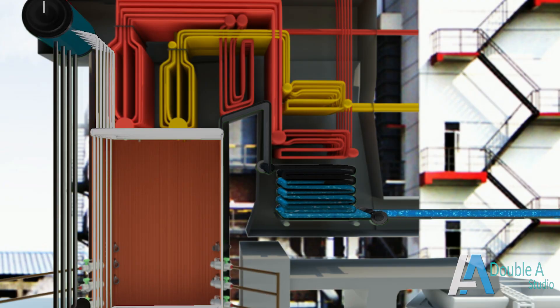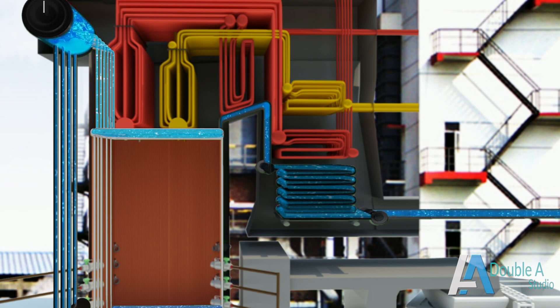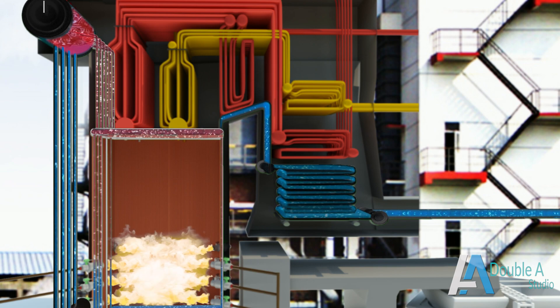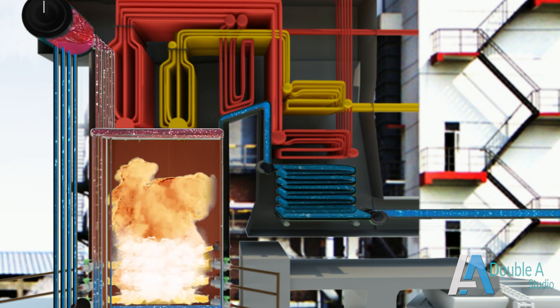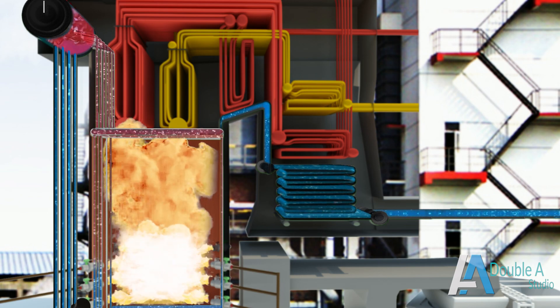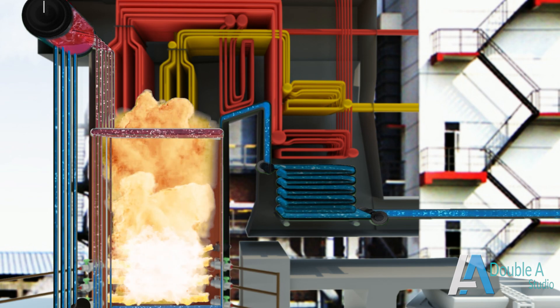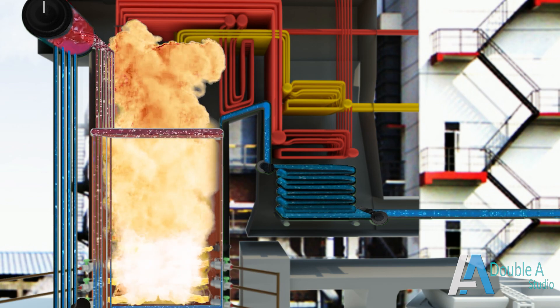Water flows inside these tubes and gets heated up when heat is generated in the furnace. Tubular structures increase surface area of water to be heated up and therefore increase the rate of heat transfer for converting water to steam.